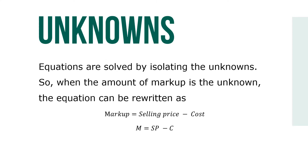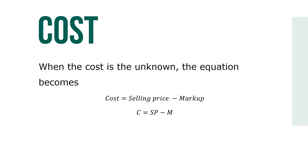Equations are solved by isolating unknowns. When the markup is the unknown, the equation can be written as M equals SP minus C. When the cost is the unknown, the equation becomes C equals SP minus M.